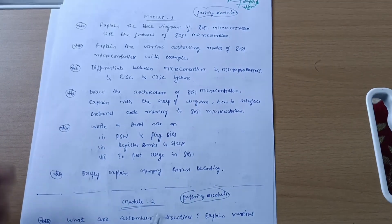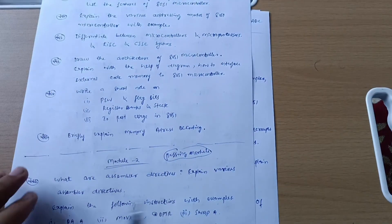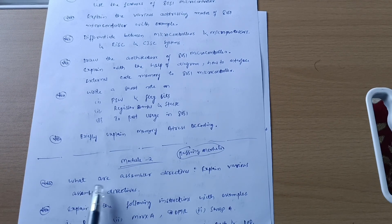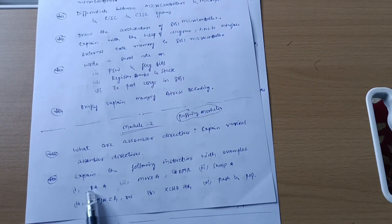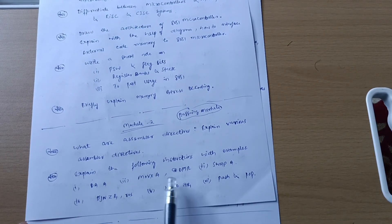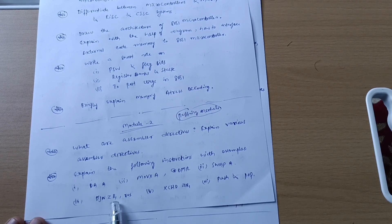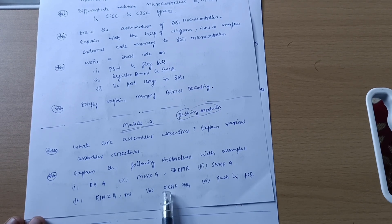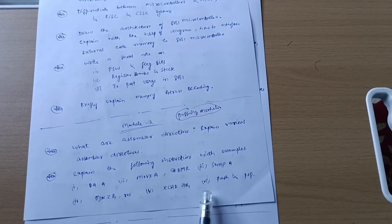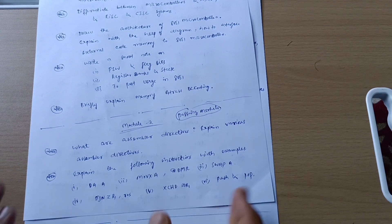Next is Module 2 which is again a passing module. What are assembler directives? Super important question - explain various assembler directives. Explain the following instructions with examples: DA, MOVC A, @A+DPTR, SWAP A, and DJNZ R1. RES and XCHD @R1 and PUSH and POP. These are some super important instructions which you should go through and refer.